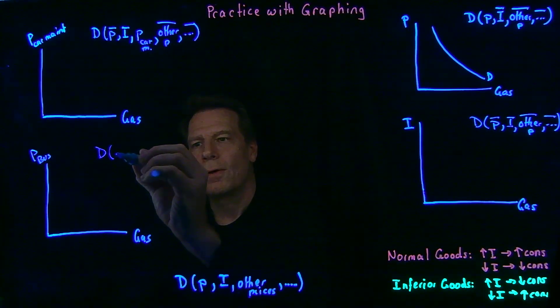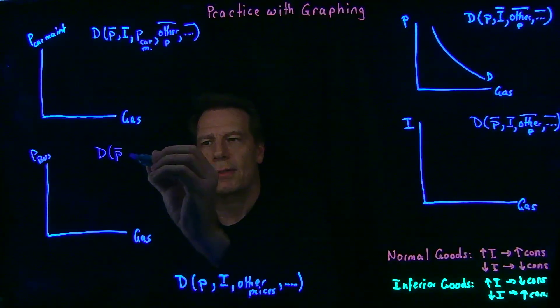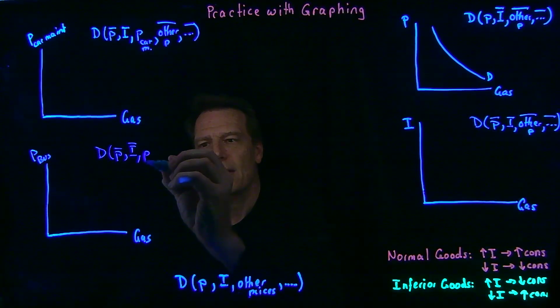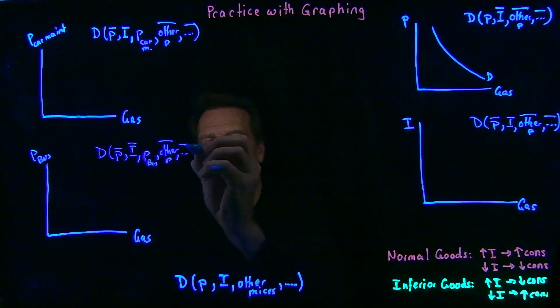So the demand, holding the price of gasoline fixed, holding income fixed, letting the price of bus rides vary, but holding other prices and everything else fixed as well.